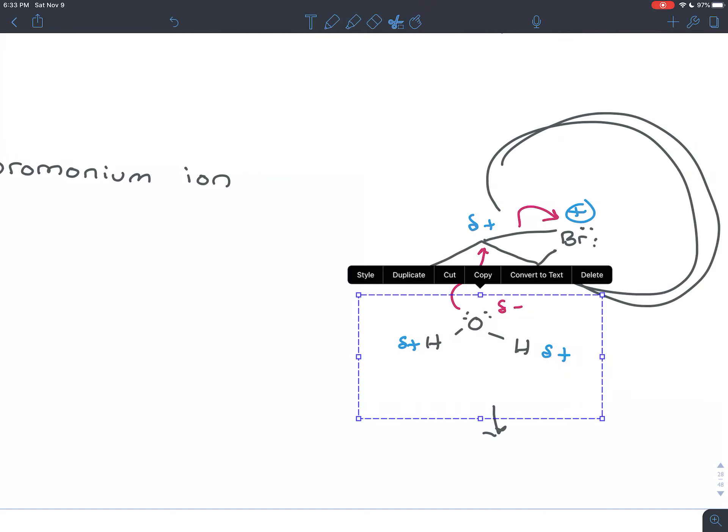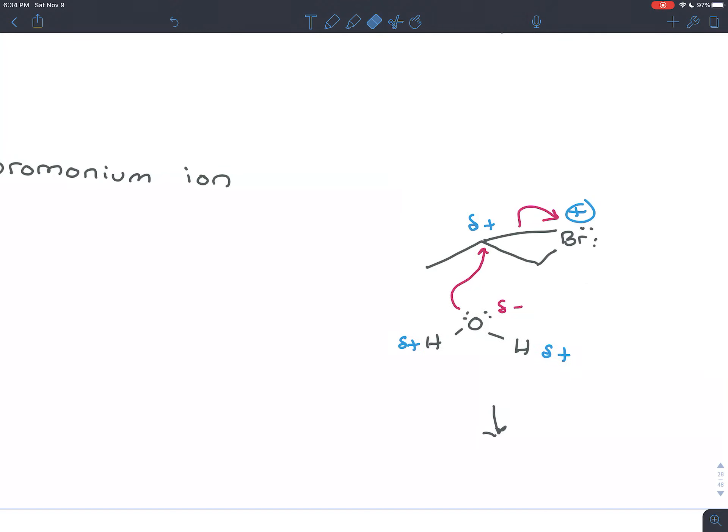So it has to attack on the opposite side - below if the bromine is above, bromonium ion is above, the OH or the H2O will attack from below. So that's the reason for the anti addition.